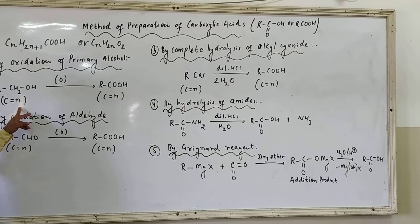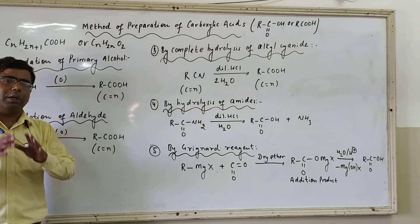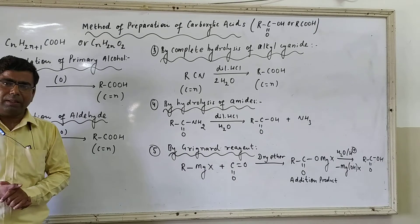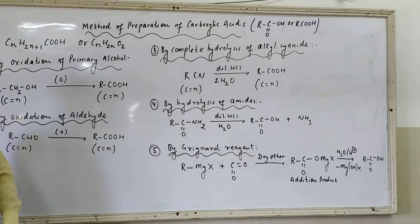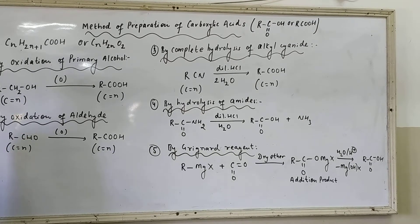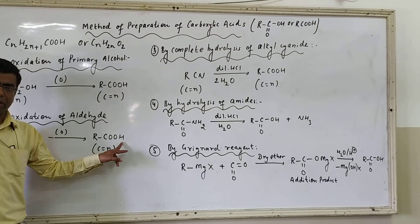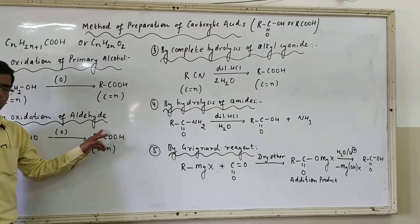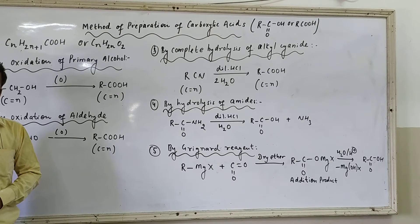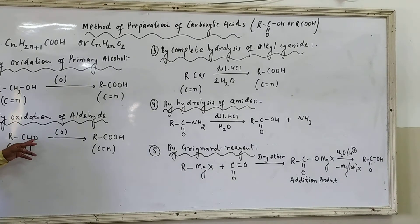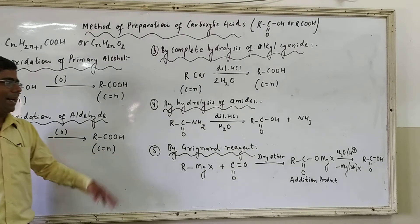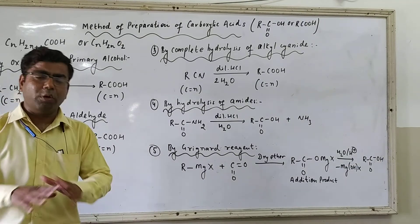If the number of carbon atoms is N in the primary alcohol, then in the carboxylic acid also the number of carbon atoms will be N. We can also use aldehyde directly — primary alcohols first form aldehyde, and aldehyde on further oxidation gives carboxylic acid. So aldehyde, represented as RCHO, on oxidation gives RCOOH. The CHO unit gets converted to COOH. There is no change in the number of carbon atoms.